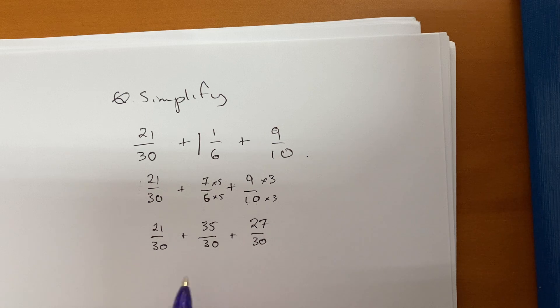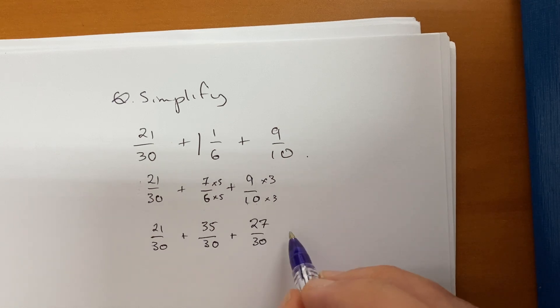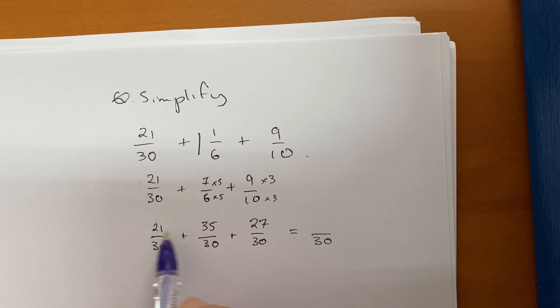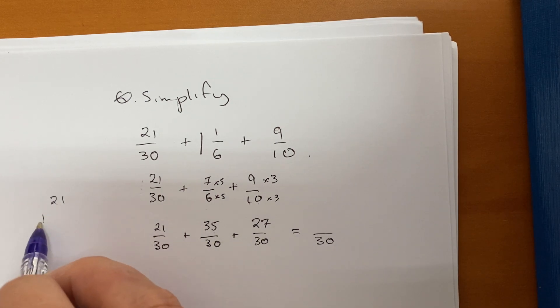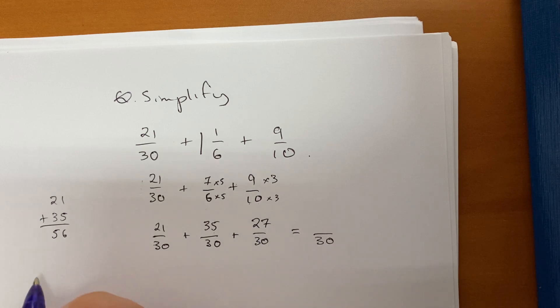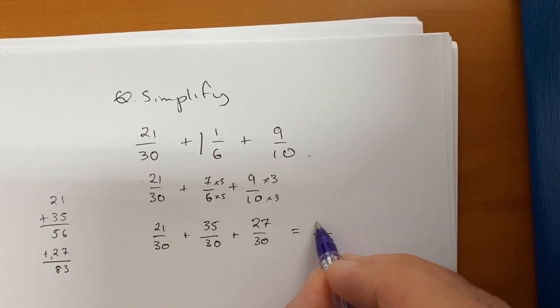Okay, so now we have all as 30s denominators. That means I can combine them to give the final answer. So I know the final answer is going to be out of 30. So 21 plus 35, maybe you can do a little bit of rough work over here: 21 plus 35, 1 plus 5 is 6, 2 plus 3 is 5. And then add the 27 to that, and the 6 plus 7 is 13, carry the 1 to the tens column, and you get 83 over 30.